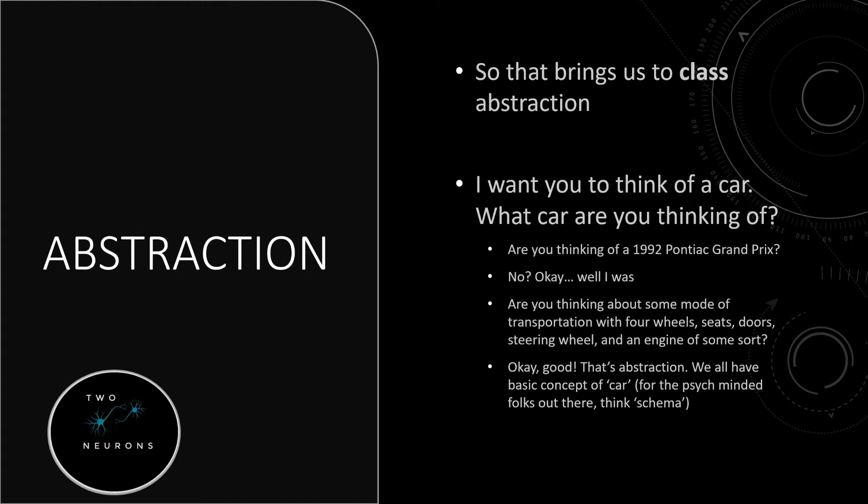We have a basic concept of what a car is. And for people with some background in psychology, think schema. We have some order of classification that we group things in. It doesn't matter that a 1992 Grand Prix is different than a Ford Mustang, is different than an Aston Martin. They all have things in common — they have wheels, they have engines, they're modes of transportation. That is abstraction. We have an idea of categorization, and from that we can have different things under it. But the idea of a car is an abstraction — it is a classification system.